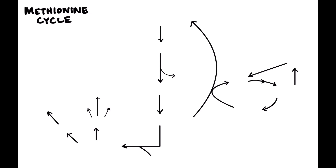There is one particular disease that's very heavily tested on the USMLE that does involve this pathway, and this pathway interacts with a few other pathways relevant to us. So let's run through it. We start with methionine — a logical place to start when talking about the methionine cycle.